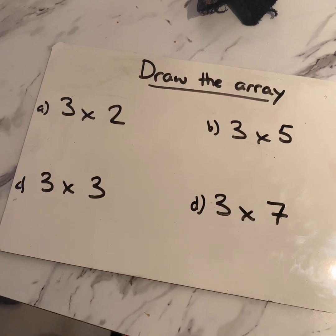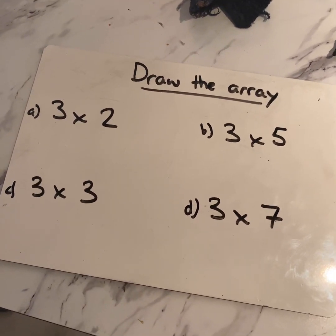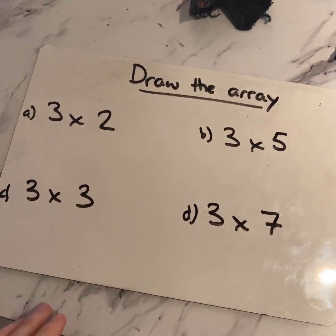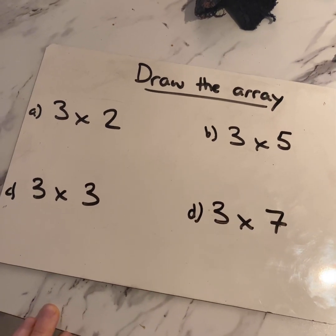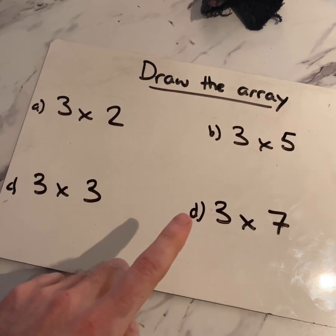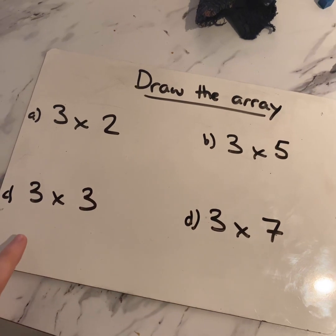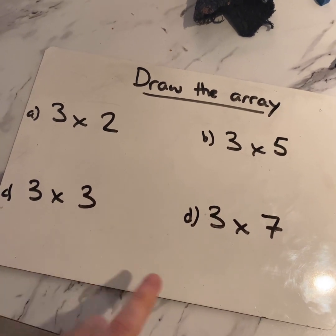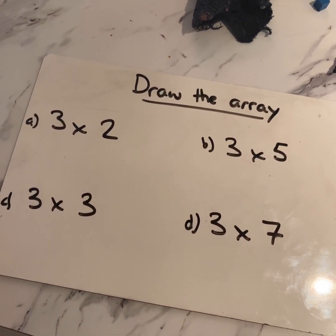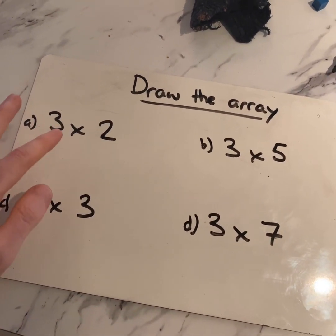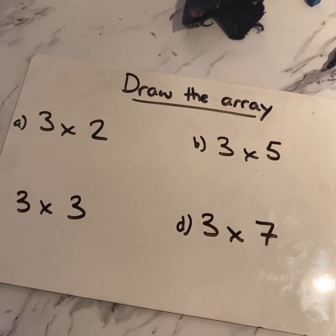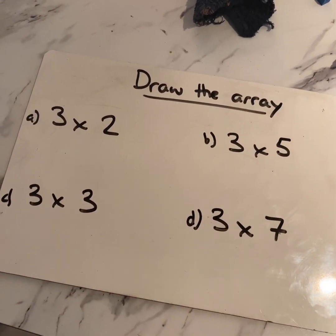So now, over to you. Pause the video and can you draw these arrays? We've got three times two, three times five, three times three, and three times seven. Remember, the way we're looking at it is three groups of two, three groups of five. Pause the video and give it a go.